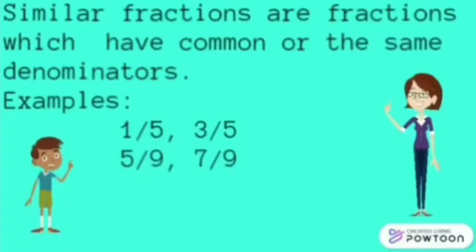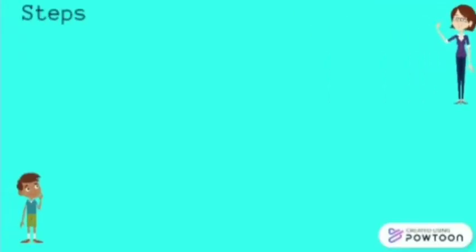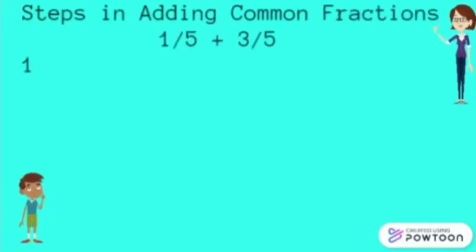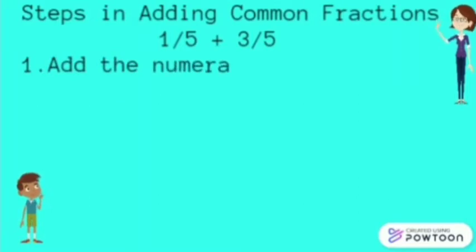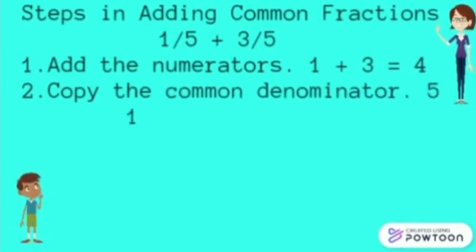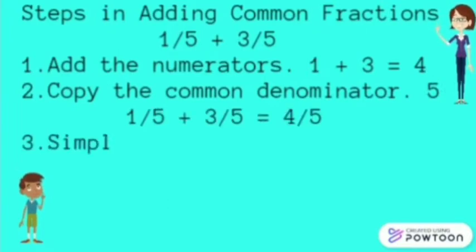How to add similar fractions. One-fifth plus three-fifths. First, add the numerators. One plus three is four. Next, copy the common denominator. For one-fifth and three-fifths, the common denominator is five. So, one-fifth plus three-fifths is four-fifths.